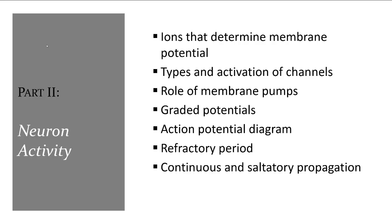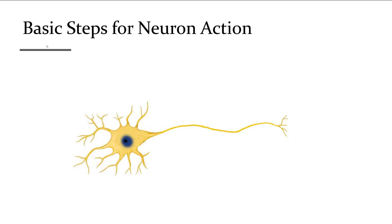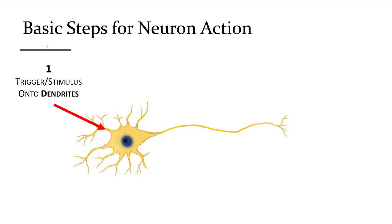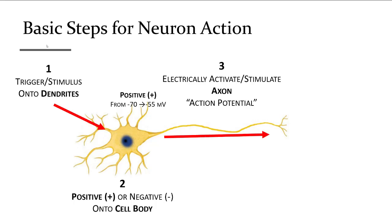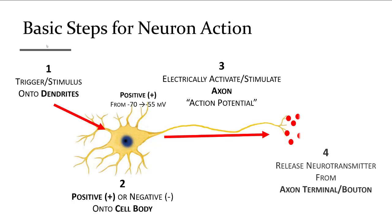Now we'll move on to neuron activity. To activate a neuron, several steps must take place. First, the neuron must be triggered to receive a stimulus. This trigger can be positive — making the neuron closer to activating — or negative, making the neuron harder to activate. If the cell body becomes more positive, the axon can reach threshold and start an action potential, which is an electrical signal that travels down the axon terminal, where it releases its neurotransmitter onto another neuron or other tissue like a muscle or gland to activate and stimulate that tissue.